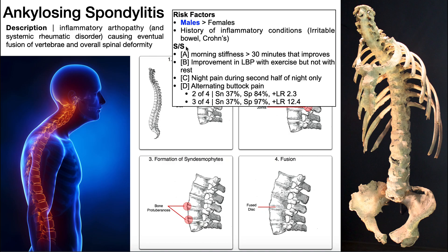In terms of the major signs and symptoms, the first two are actually very similar to osteoarthritis. The first one is morning stiffness, particularly in the back, that improves in about 30 minutes to an hour with normal movement throughout the day. The second one is improvement in low back pain with exercise, but not with rest. Individuals with ankylosing spondylitis and osteoarthritis tend to feel better with exercise — motion is lotion. These people are going to feel better once they start moving, but once they sit down for a long period of time or lay down in bed, that's when this pain can start to come on.